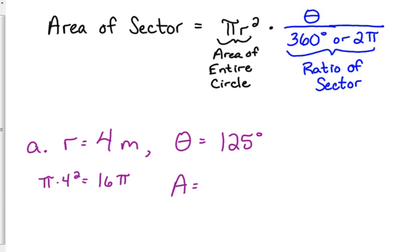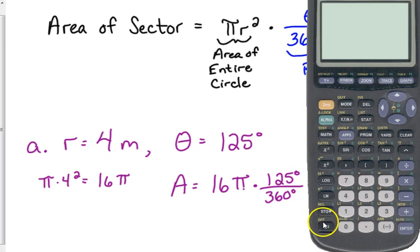So the area of our sector is going to be 16 pi times 135 over 360, and we're just going to type it all into our calculator. So it does not matter what mode you're in. The mode only matters when we're actually using the trig functions. So 16 pi times 135 over 360, you can put that in parentheses if you want to, you're going to have to.